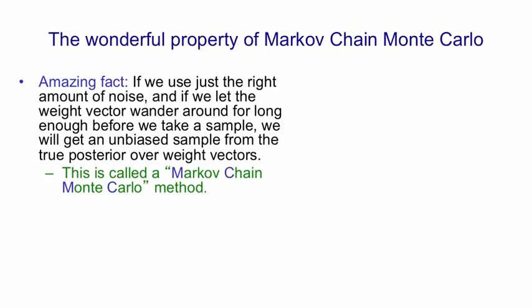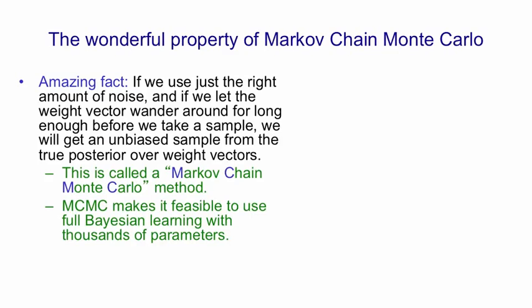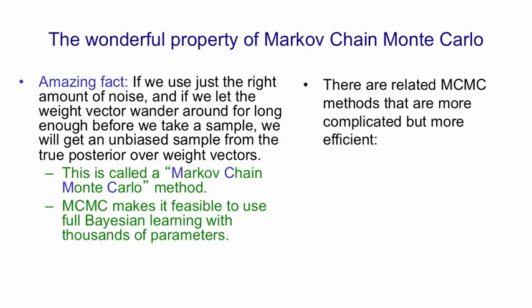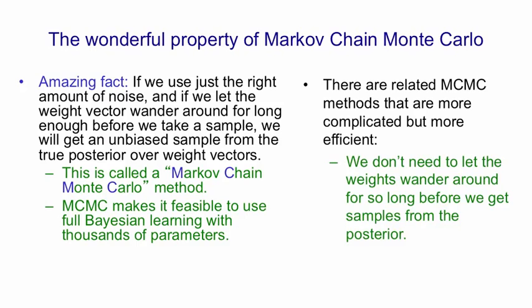This is called Markov chain Monte Carlo. And it makes it feasible to use Bayesian learning with thousands of parameters. The method I suggested of adding some Gaussian noise is called the Langevin method. And it's not the most efficient method. There's more sophisticated methods that are more efficient. And what I mean by more efficient is, they don't need to wander around the weight space for so long before you can start taking those red samples.